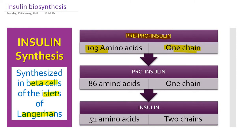Some amino acids are cleaved off during processing in the Golgi apparatus by proteolytic cleavage, forming pro-insulin. It is still one chain, made up of around 86 amino acids. Pre-pro-insulin has around 109 amino acids; after the leader sequence is cleaved off by proteolytic enzyme, we have 86 amino acids. This one peptide chain is called pro-insulin, and it is still an inactive precursor of insulin.